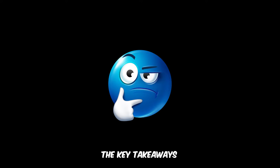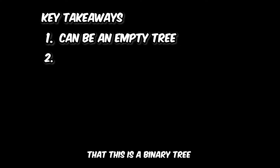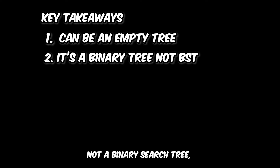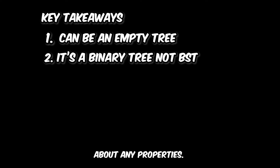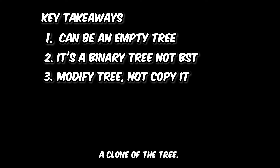So what are the key takeaways of this problem? The first key takeaway is that we can be given an empty tree, as you can see by example three. The second key takeaway is that this is a binary tree, not a binary search tree, so we don't have to worry about any properties. The last key takeaway is that we have to return the root, so we don't have to make a clone of the tree — we have to modify the tree itself.